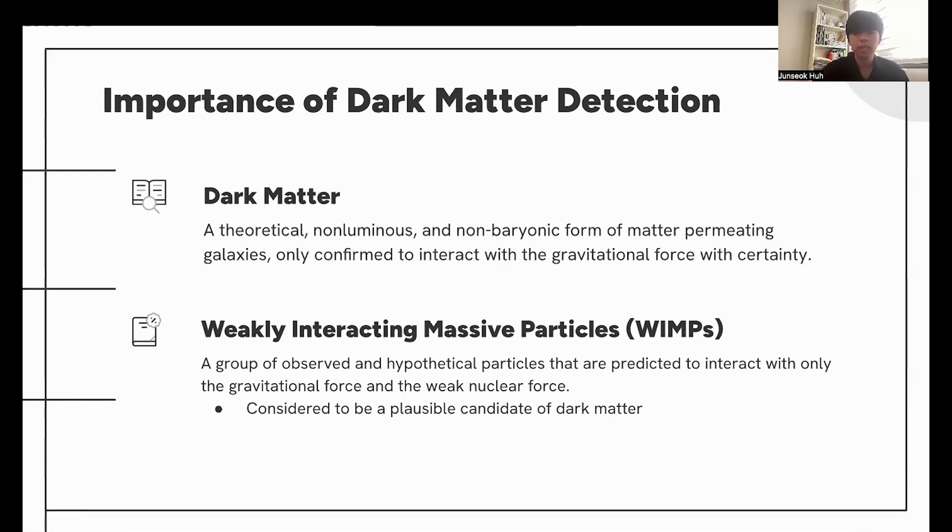A highly plausible candidate for dark matter are a group of particles known as WIMPs, weakly interacting massive particles. These are a group of observed yet hypothetical particles that are predicted to interact with only the gravitational and the weak nuclear force. They are considered to be a compelling candidate for dark matter, mainly due to their quantity.